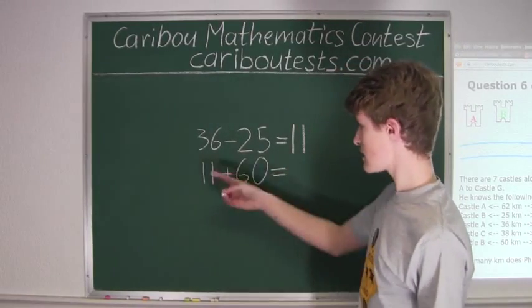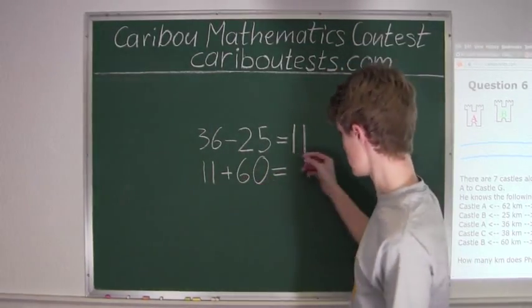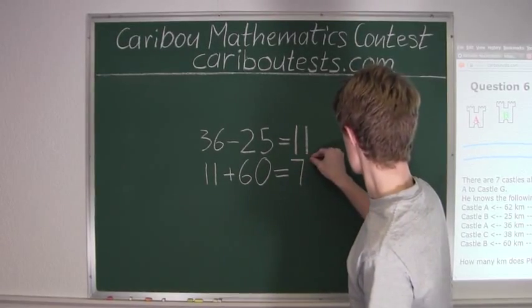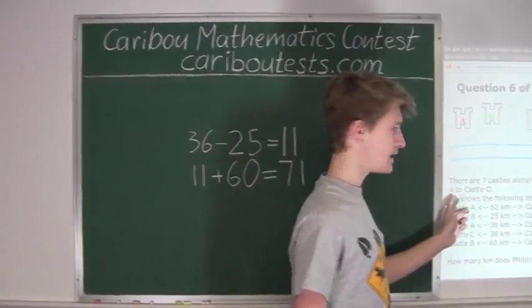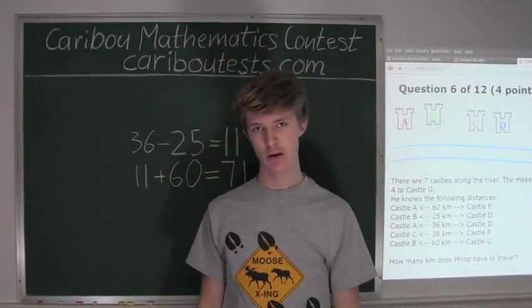11 plus 60, 10 plus 60 is 70, plus 1 is 71. So we know the distance from Castle A to Castle G is 71 kilometers.